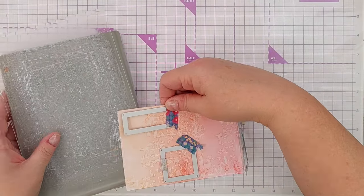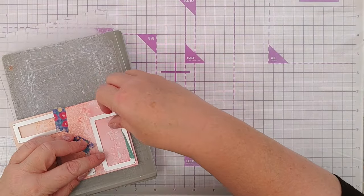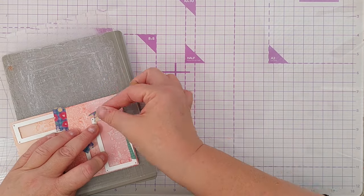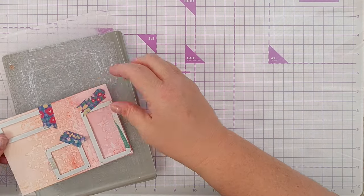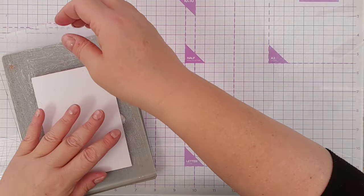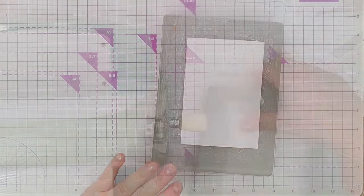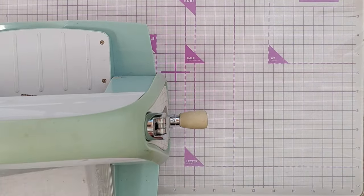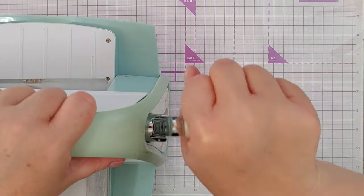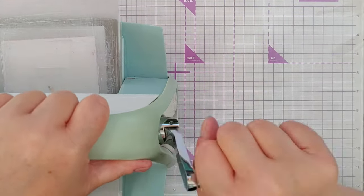Next I used two rectangle frame dies and one square frame to cut some pieces from my inked cardstock. These are great little dies, they cut a stitched frame but you can also use the bit in the middle and that's exactly what I did.